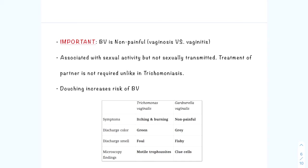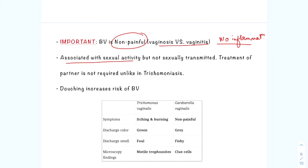An important differentiating point: bacterial vaginosis is non-painful, contrasting with vaginitis which is painful. In bacterial vaginosis, there is no inflammation, so there is no burning, no pain, and no itching. Another very important point: bacterial vaginosis is associated with sexual activity but is not sexually transmitted. Because it is not sexually transmitted, treatment of the partner is not required — unlike trichomoniasis.